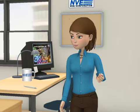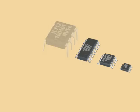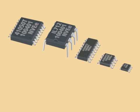Downright. IsoLoops are available in MSOPS, narrow and wide SOICs, plus PDIPs, with up to 5 channels per device.